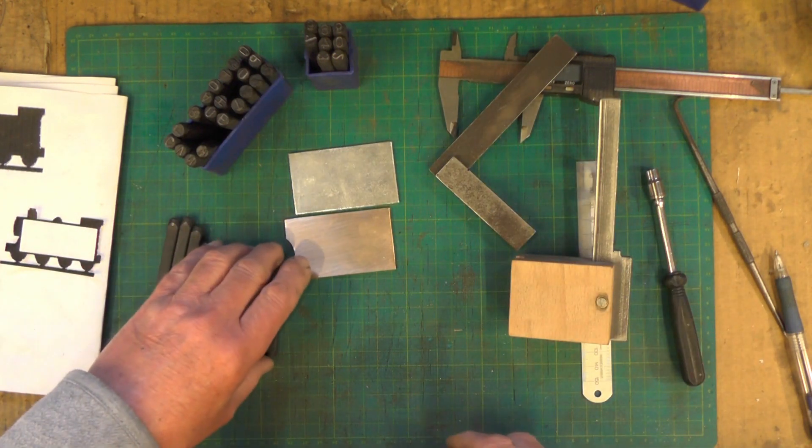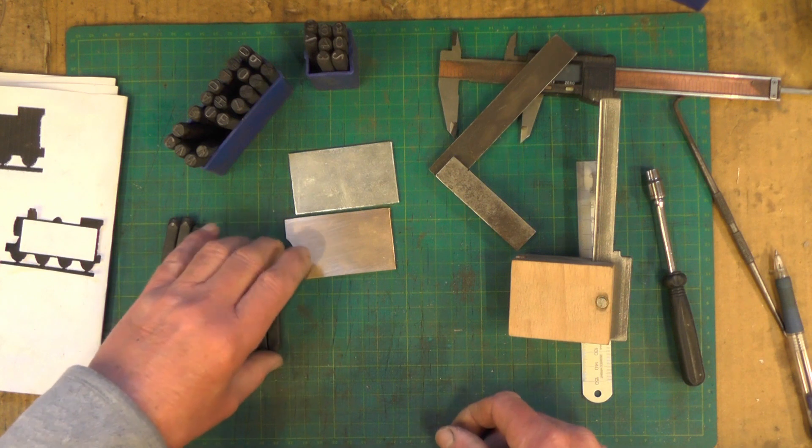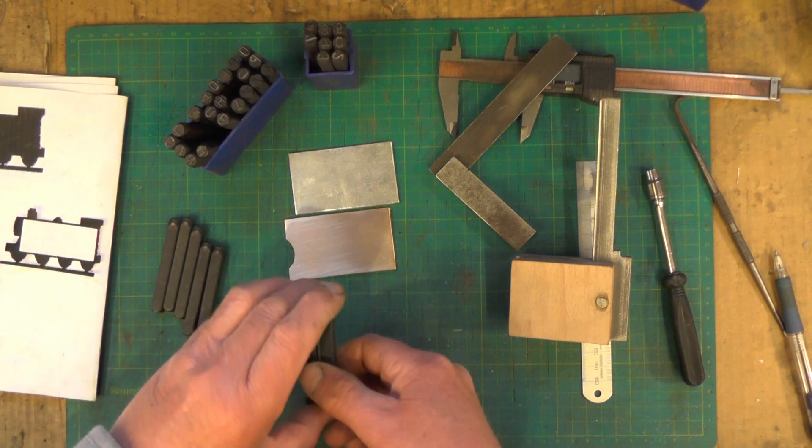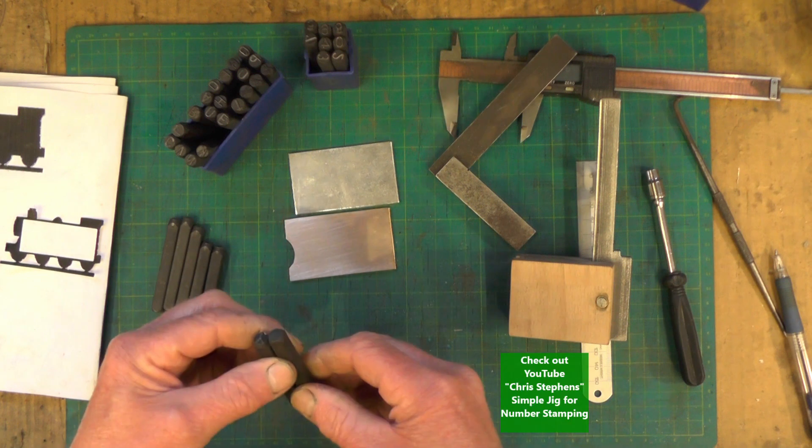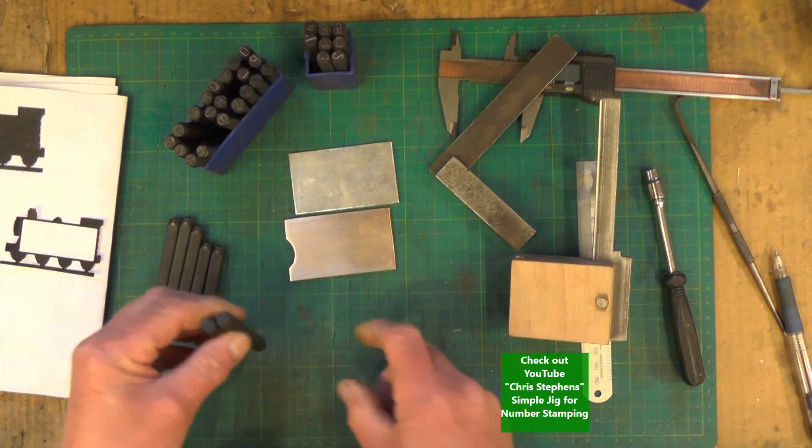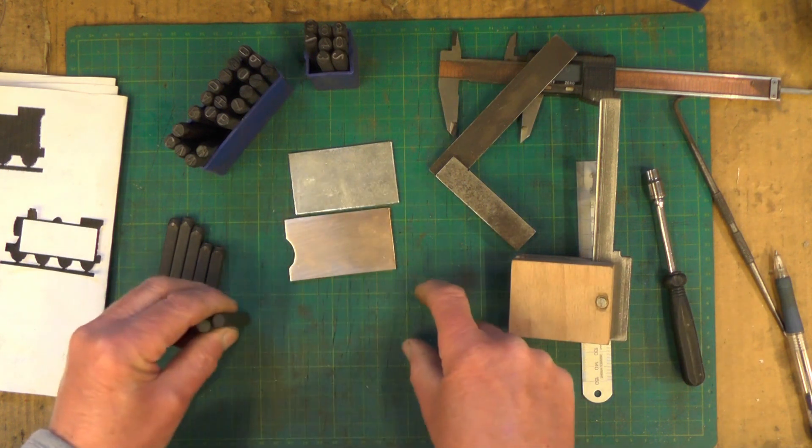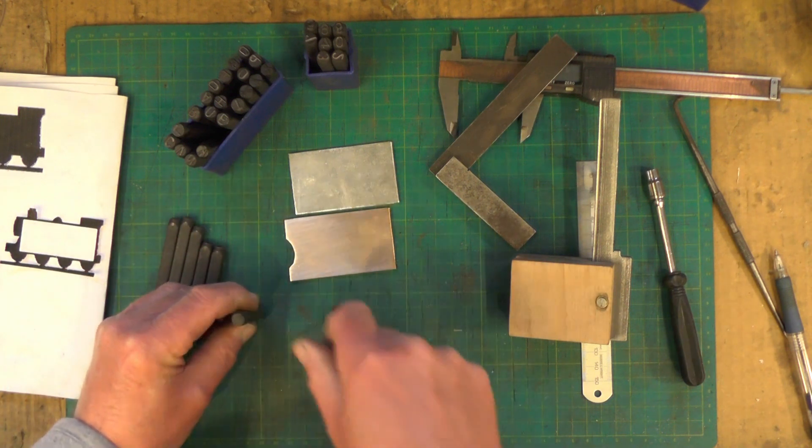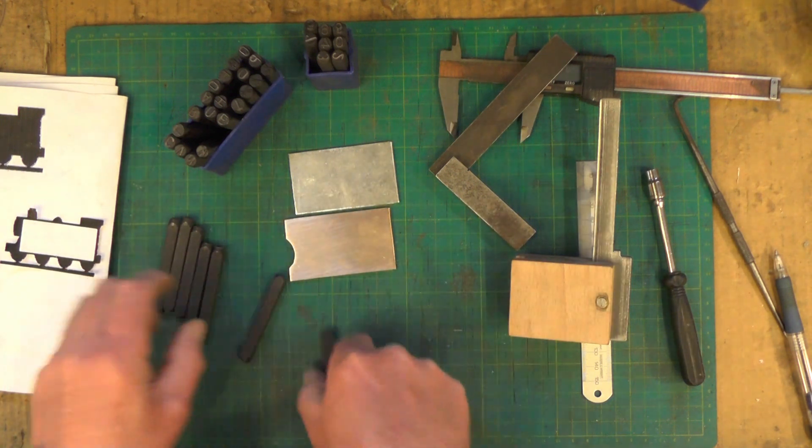If you've not got a mill and you want to do it freehand, I'll put you on to a good video. If you go to Chris Stevens and put in, I think, "number stamping," he's got a very simple method and easy-to-make jig where you can stamp everything up and get it in line freehand. I'll put a link up to it.